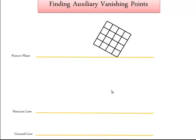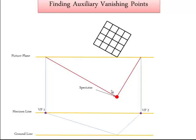Note the picture plane is touching one edge. Then find your spectator. Find your auxiliary or your vanishing points, and then bring them down to your horizon line. Construct the bottom of your object.